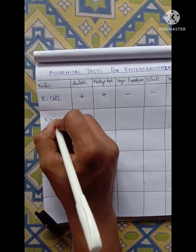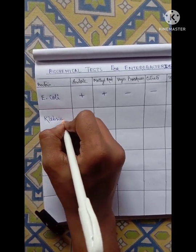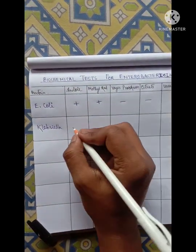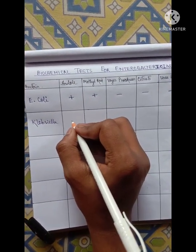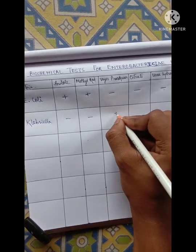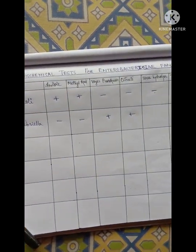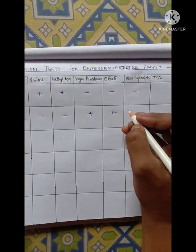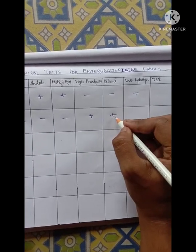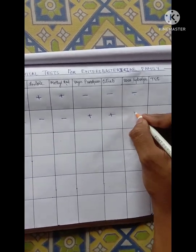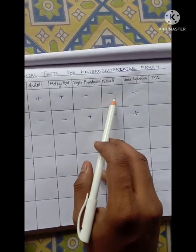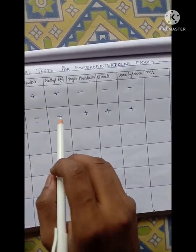Next there is Klebsiella. For Klebsiella, just make it the opposite of E. coli — it will be Indole negative, Methyl Red negative, Voges-Proskauer positive, Citrate positive. Since I said Urease is the same as Citrate for E. coli and Klebsiella, it will again be positive. So: minus, minus, plus, plus, plus.